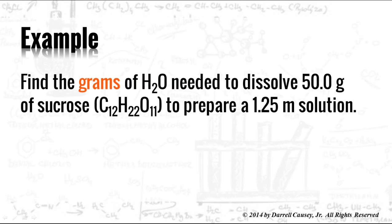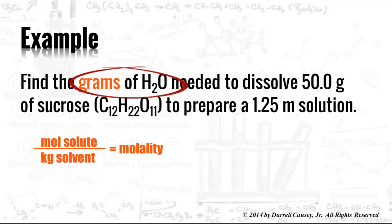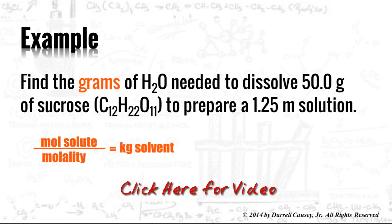In this one we're going to find the grams of the solvent already knowing the molality. This would be like in the laboratory. Let's say you wanted to prepare a certain molality. You need to know how much water you're going to add to a certain amount of solute. So what you need to do is take your kilogram solvent and switch it around. That's just a little bit of algebra. If you're weak on your algebra, you might go back and watch my algebra review video for science.